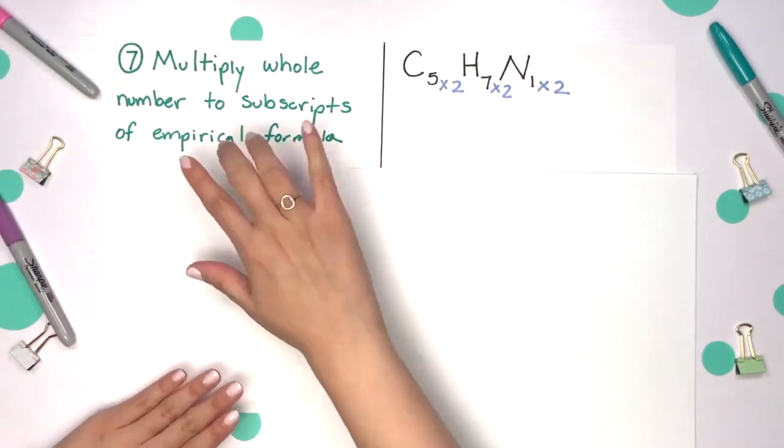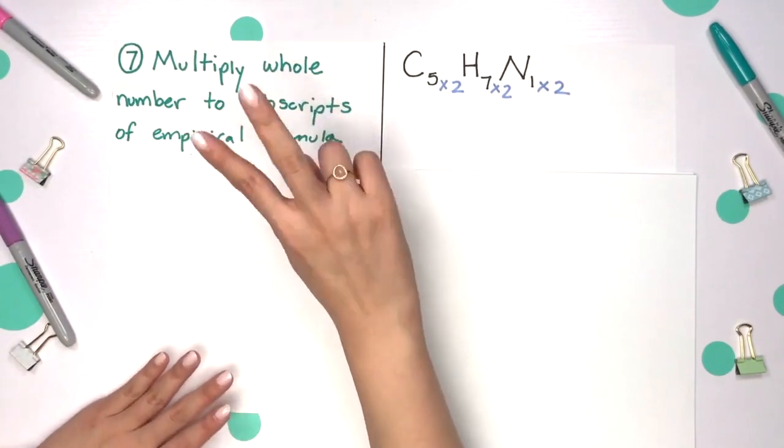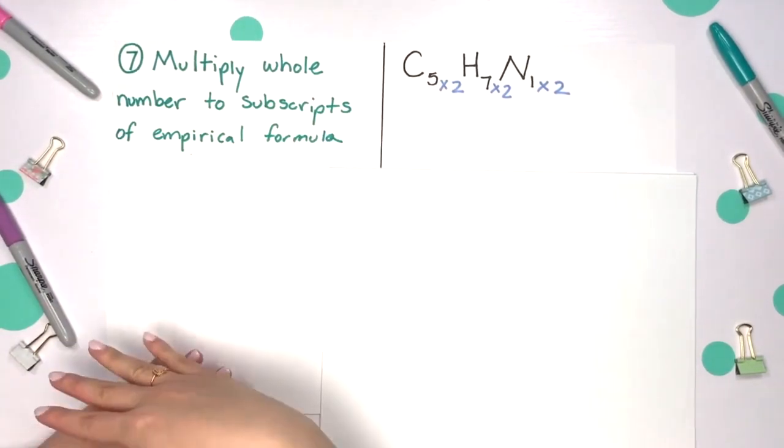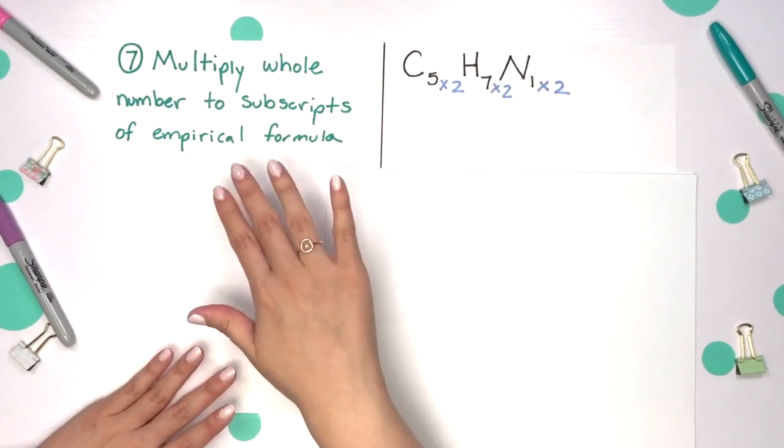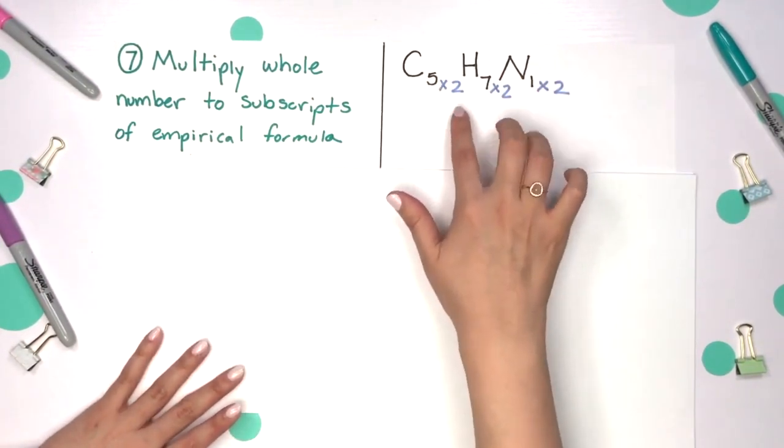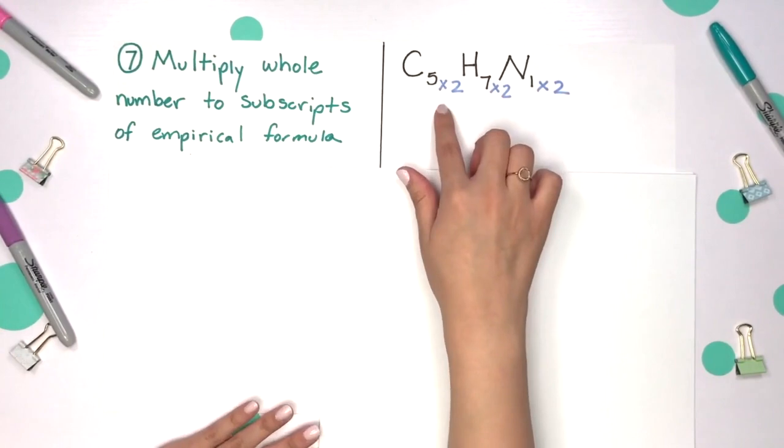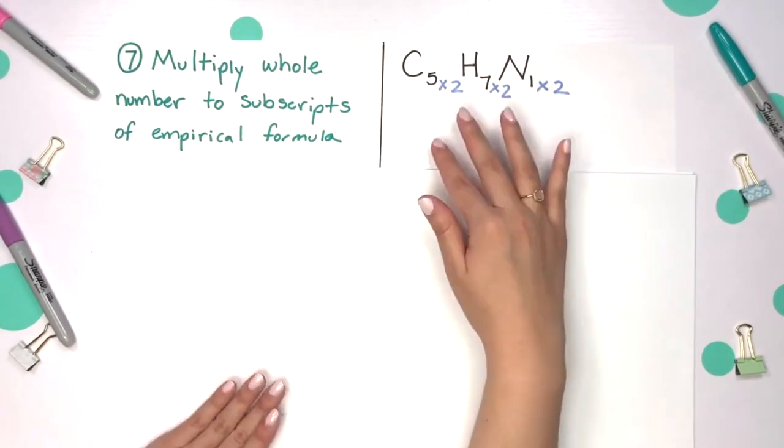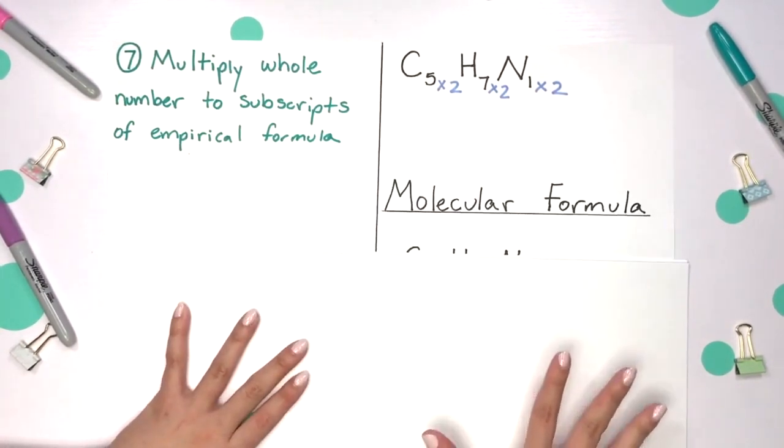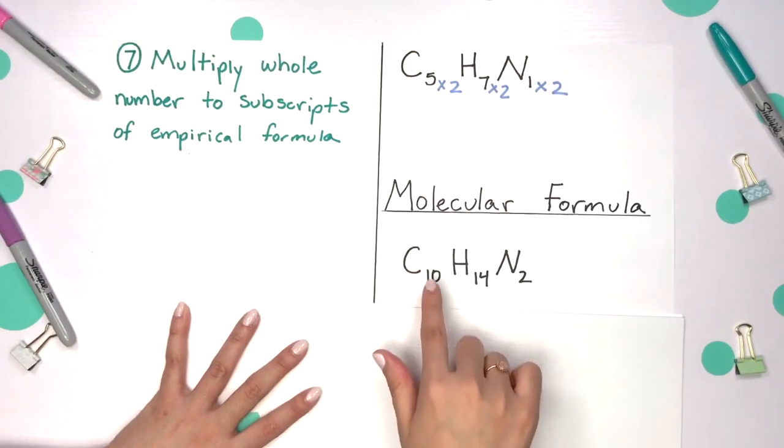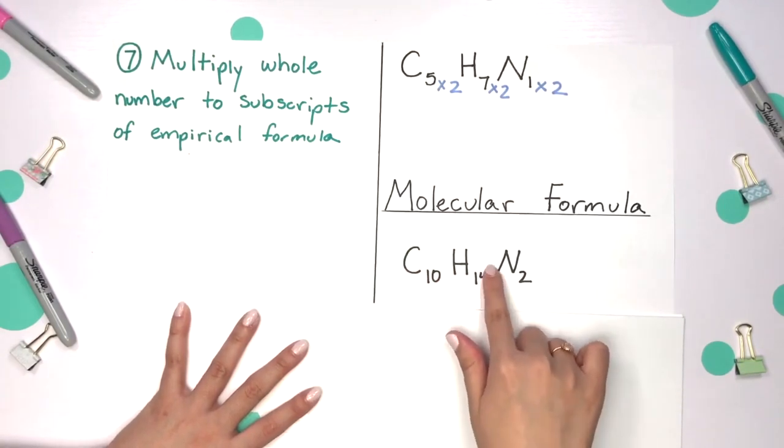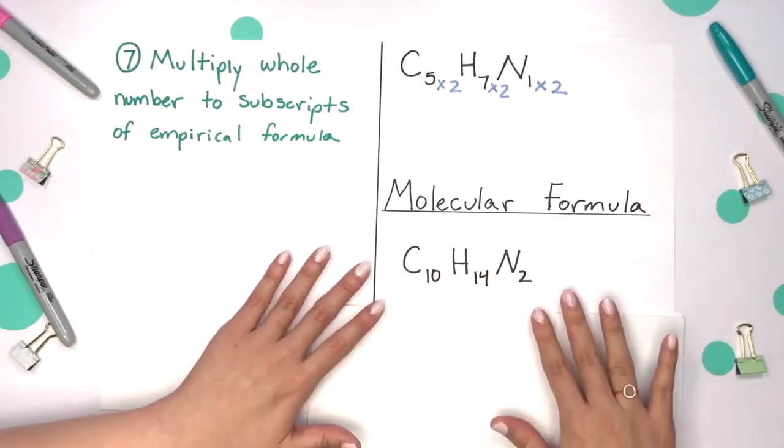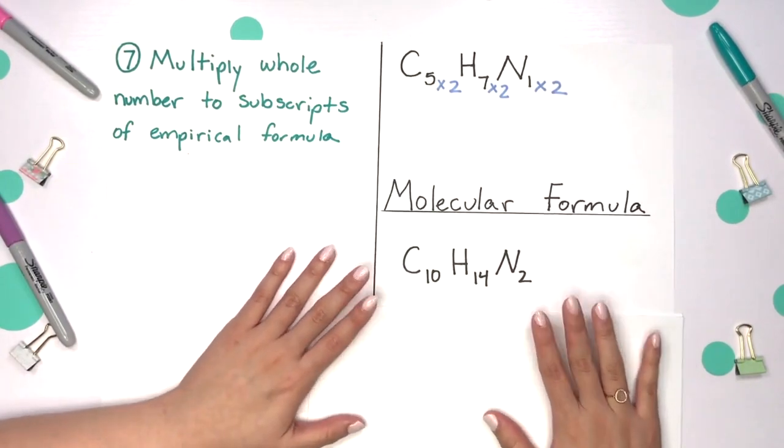Our final step is to multiply that whole number, which was 2 that we found in the previous step, to each subscript of your empirical formula. So in the black, you'll see our empirical formula. We're multiplying by 2 that we found before, and finally we get our molecular formula of C10, H14, and N2. This is the exact chemical formula of nicotine.